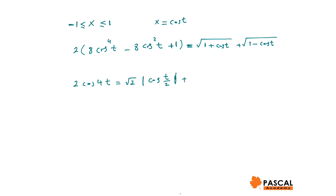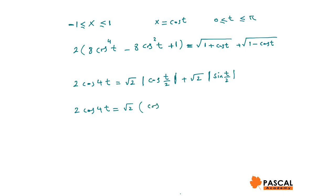And square root of (1 minus cos t) equals square root of 2 times the absolute value of sin(t/2). Since t is between 0 and pi, both cos(t/2) and sin(t/2) are positive. From here, we can write 2cos(4t) equals square root of 2 times (cos(t/2) plus sin(t/2)).